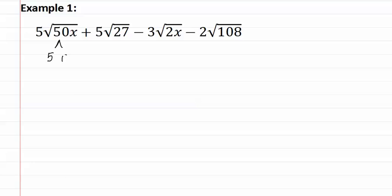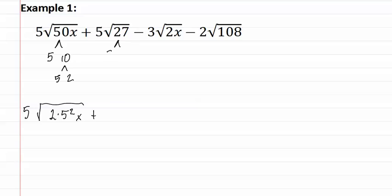Fifty is five and ten, and five and two, which means inside it is two times five squared times x. Next is twenty-seven: twenty-seven is three and nine, and three and three, which means that inside it is three to the third.